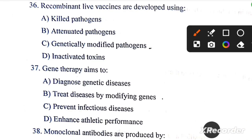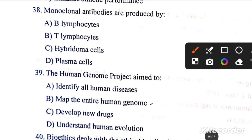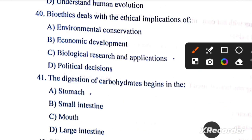PHB is an example of biodegradable polymer. DNA fingerprinting is widely used in forensic science. Recombinant live vaccines are developed using... the answer is option B. Gene therapy aims to treat diseases by modifying genes. Next, monoclonal antibodies are produced by... the answer is B, hybridoma cells. The Human Genome Project aims to map the entire human genome. Question number 40: bioethics deals with the ethical implications of biological research and applications.